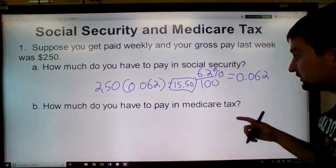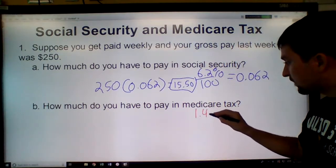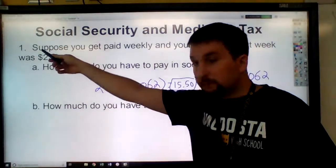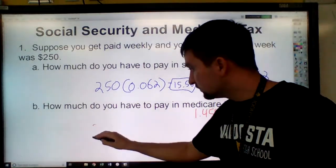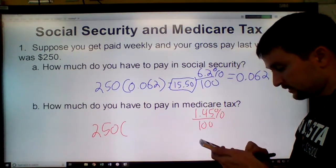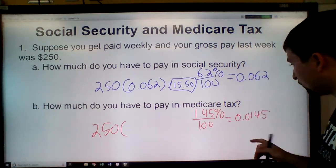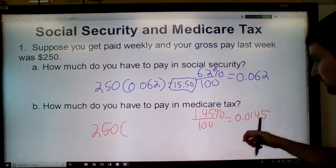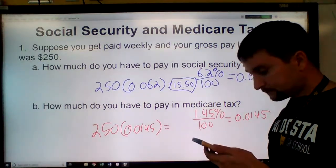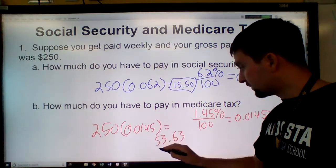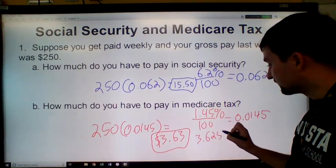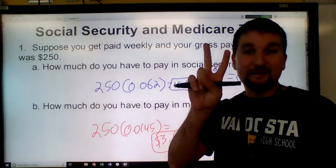Now let's figure out how much you'd pay in Medicare tax. Remember, Medicare tax is 1.45%. You take your gross pay, $250, and multiply it by 1.45% as a decimal. Divide by 100 to get 0.0145, then multiply by 250. That gives you about $3.63. Your calculator probably gave you 3.625, but I rounded it up to $3.63 because you can only have two decimal places with money.